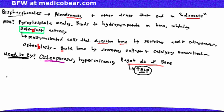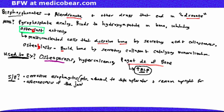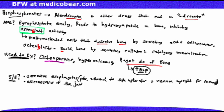Some unique and high-yield side effects of bisphosphonates worth knowing are corrosive esophagitis and osteonecrosis of the jaw. Because of the risk of corrosive esophagitis, patients are advised to take bisphosphonates with water and remain upright for 30 minutes. First Aid for the USMLE includes this as a way to reduce the chances of patients developing corrosive esophagitis.